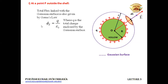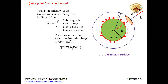The total flux linked with the Gaussian surface is given by Gauss's law as Q upon epsilon naught. The value of Q is the surface charge density of the thin spherical shell multiplied by its surface area. The Gaussian surface encloses the charge present over the area 4 pi R squared — the surface area of the thin spherical shell. So Q equals sigma times 4 pi capital R squared.